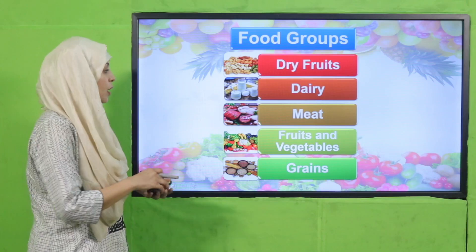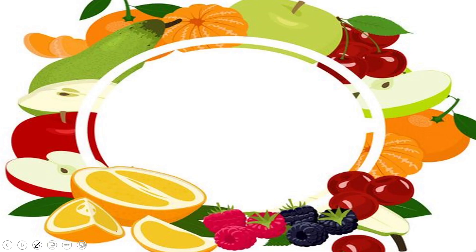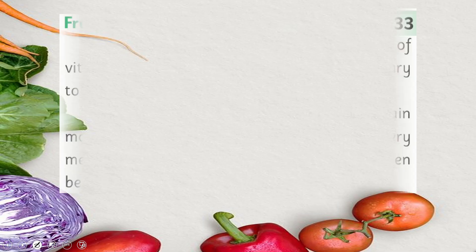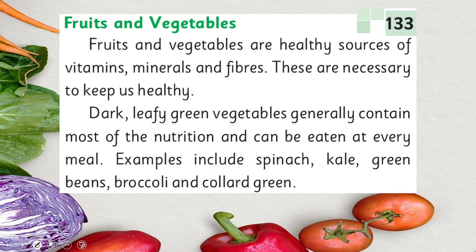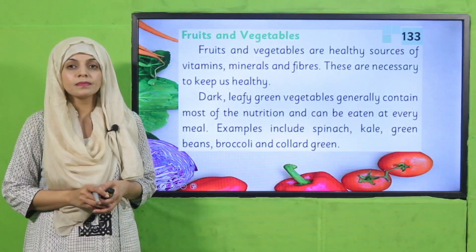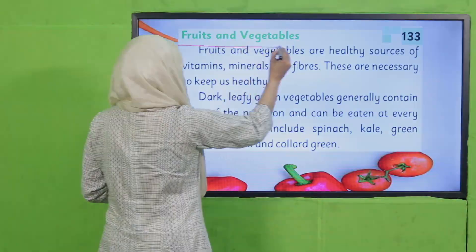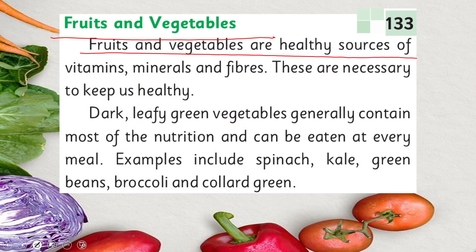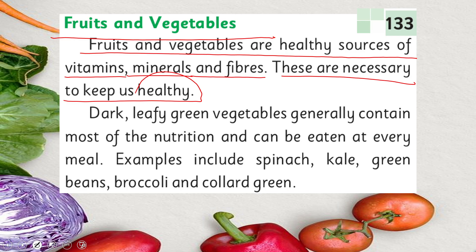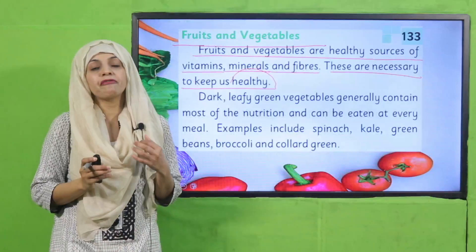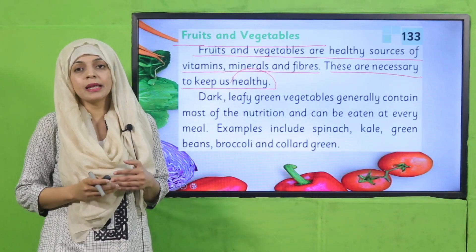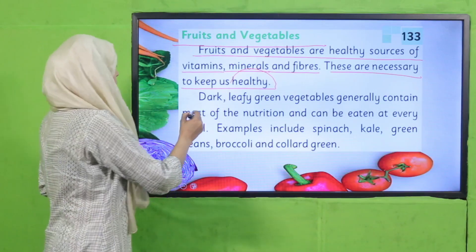My dear students, let's start the reading. Quickly open page number 133 in your GK 3 books. Fruits and vegetables are a healthy source of vitamins, minerals and fibers. These are necessary to keep us healthy. Fruits are rich in vitamins and minerals, and they also have fiber in them, which is very important for our stomach and gut health.